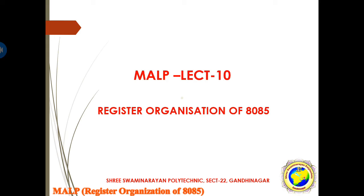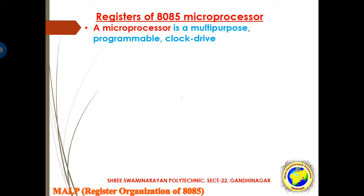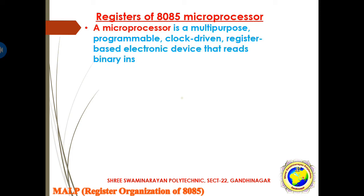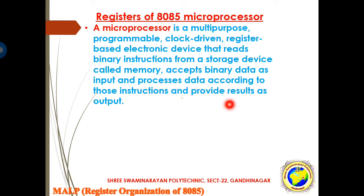This lecture is very important for understanding architecture in a very easy way, so every student must listen carefully and note down everything. Everyone must understand that before the architecture, the register organization is a must. So let's start with the register organization. What is the role or function of the microprocessor? A microprocessor is a multipurpose, programmable, clock-driven, register-based electronic device that reads binary instructions from storage devices called memory.